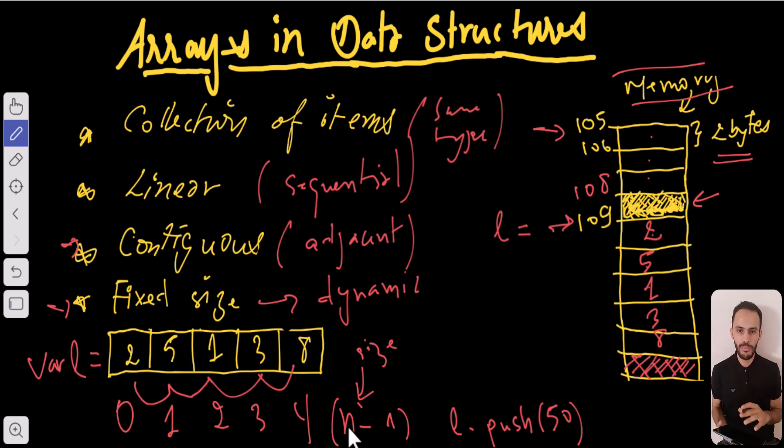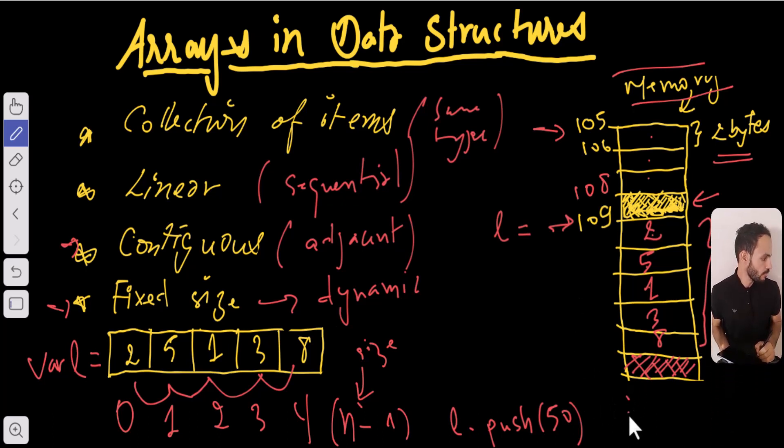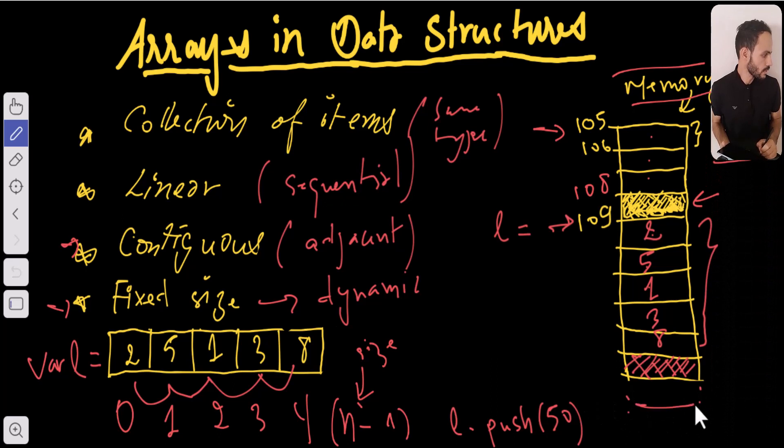So it's going to copy all these elements. And let's say we found a new empty space at address 130. So it's going to copy those elements here.